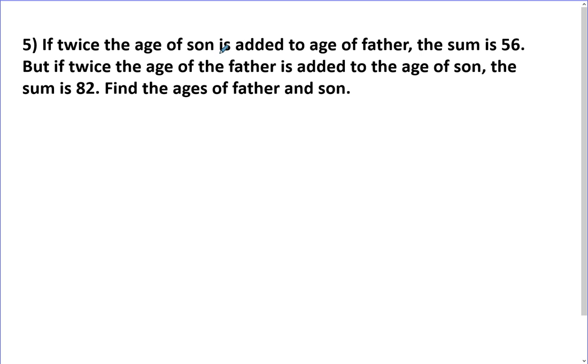Let's take this last one. If twice the age of the son is added to the age of the father, the sum is 56. But if twice the age of the father is added to the age of the son, the sum is 82. Find the ages of the father and the son. So let's say S is the age of the son and F is the age of the father. So twice the age of the son, so 2s plus the age of the father is 56. And twice the age of the father plus the age of the son comes to 82.